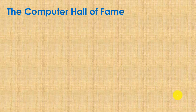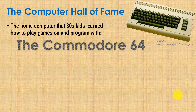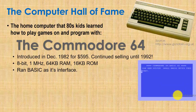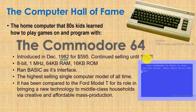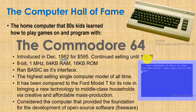That concludes the fast adders section; next we move on to multipliers. But first, this week's Computer Hall of Fame: the Commodore 64, introduced in December 1982 for $595. It was an 8-bit computer running at 1 MHz with 64 KB of RAM and 16 KB of ROM, using BASIC as its interface. It continued selling for 10 years and became the highest-selling single computer model of all time.